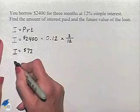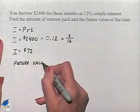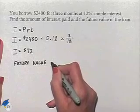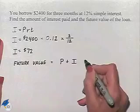The future value is going to be found in two different ways. One way is just to notice that if we take our principal and we add to it our interest, that would give us our future value.